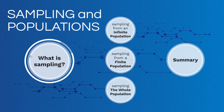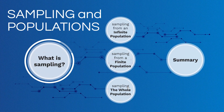Firstly, we're going to have a look at sampling from a theoretical standpoint — what is it, and why is it absolutely fundamental to the study of statistics? We'll then look at three scenarios: sampling from an infinite population, sampling from a finite population (often termed sampling without replacement), and finally sampling the whole population itself. We'll deal with a concrete and fun example.